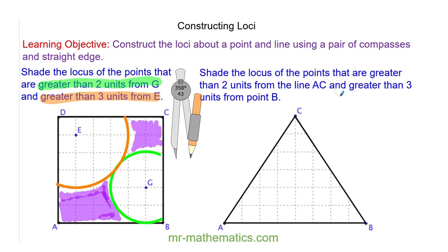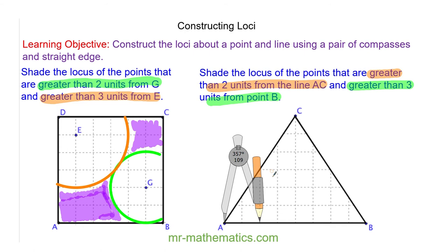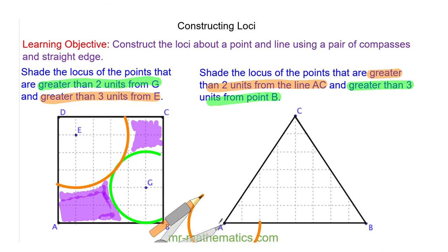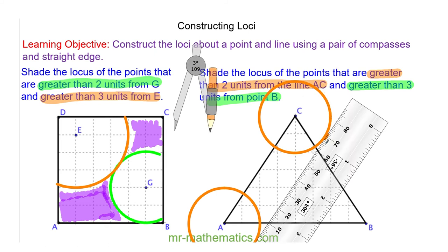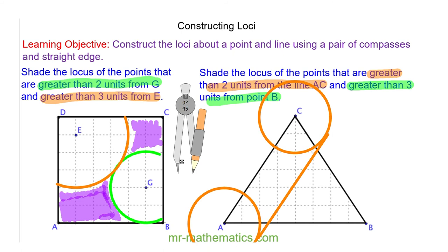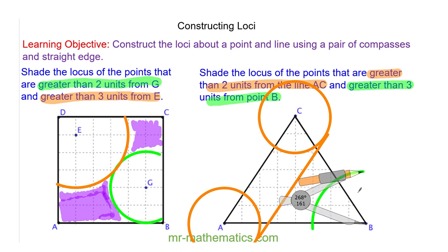For our final question, we are going to shade the locus of the points that are greater than 2 units from line AC, and greater than 3 units from point B. To begin, I am going to draw a circle at point A and point C of radius 2 units. Now I am going to draw a parallel line of distance 2 units from AC. Finally, I am going to draw a circle of 3 units around point B. The question asks to shade the locus of the points that are greater than 2 units from line AC and greater than 3 units from point B, so this will be in this region here.